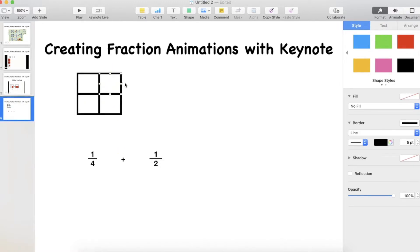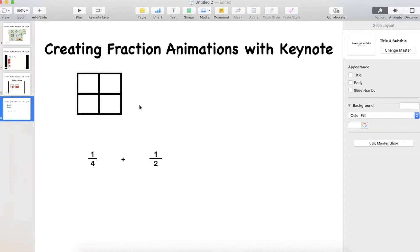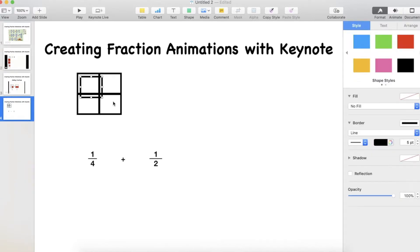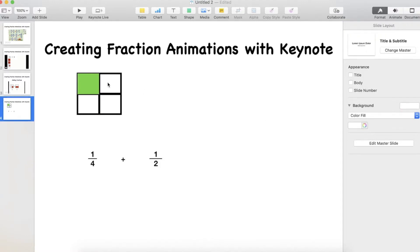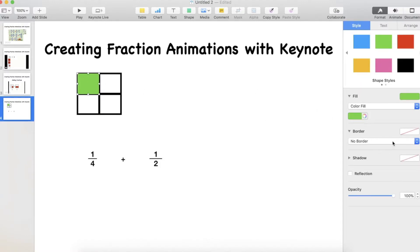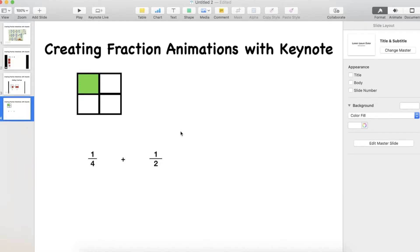So we've now got an object split into four. Now to make that one quarter I'm going to paste another shape and put it over the top right. This one though rather than leaving it unfilled I'm going to fill it with the color green. So now if I give that one also a border of a line I've now got my fraction one quarter.